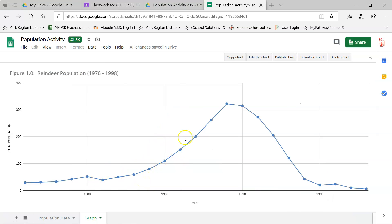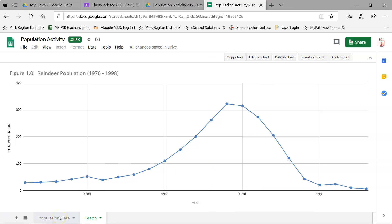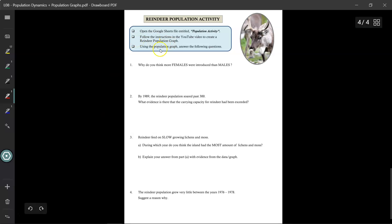All right. So using this graph and using the population data sets from this chart over here, you can now answer the questions on your PDF file and upload it to our Google Classroom. All right. That's it. And good luck. If you have any questions, please ask your teacher. In the future. Thank you.